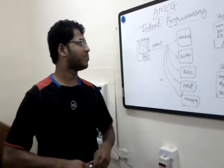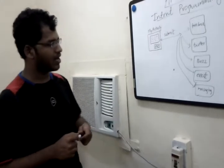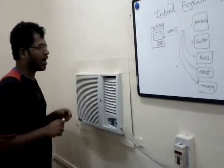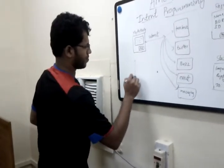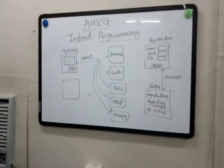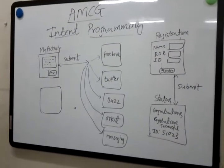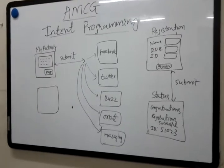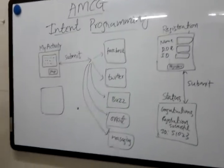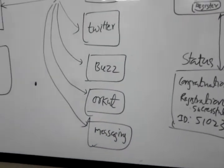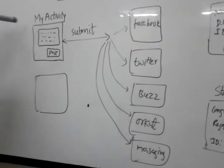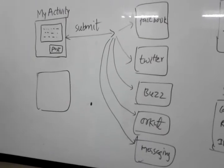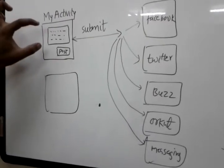I will tell you two problem statements and how to address them using Android intent programming. For example, I have an activity with an edit box and a post button. Whatever I type in the edit box and click the post button should be submitted — specifically, it should be submitted to ARCUT as a scrap message. How to transmit data typed in my own application and post it in ARCUT as a scrap message — that we will see.